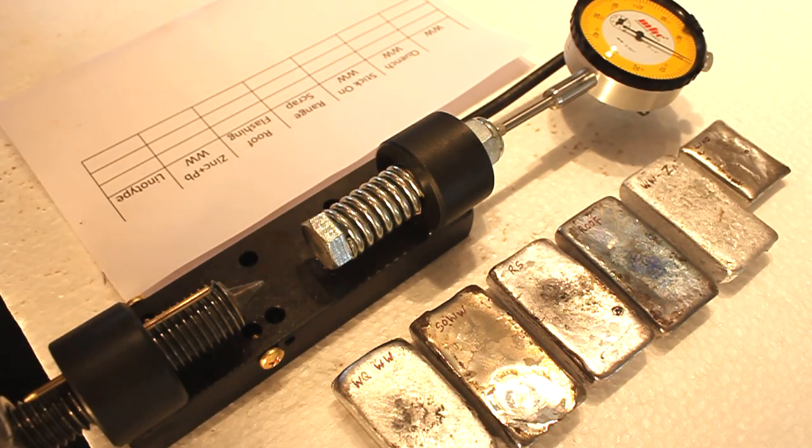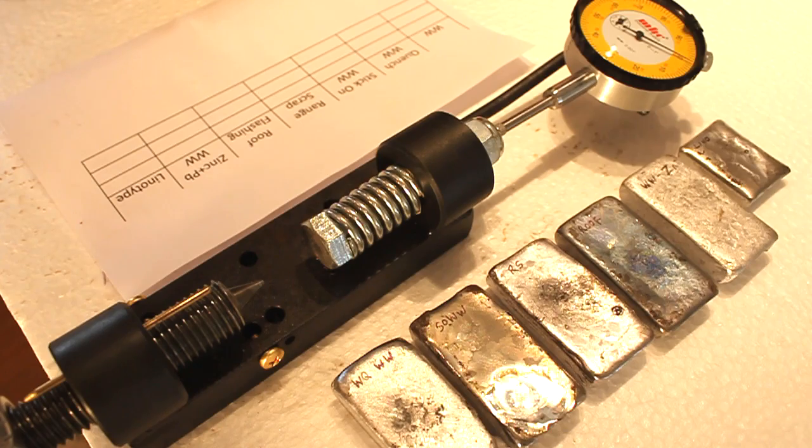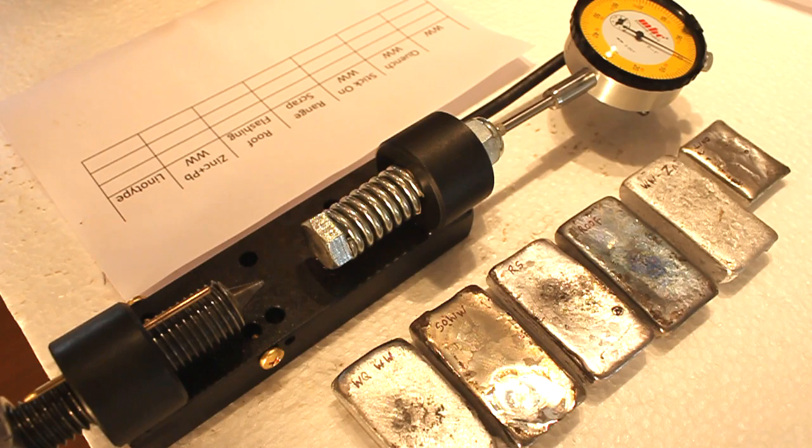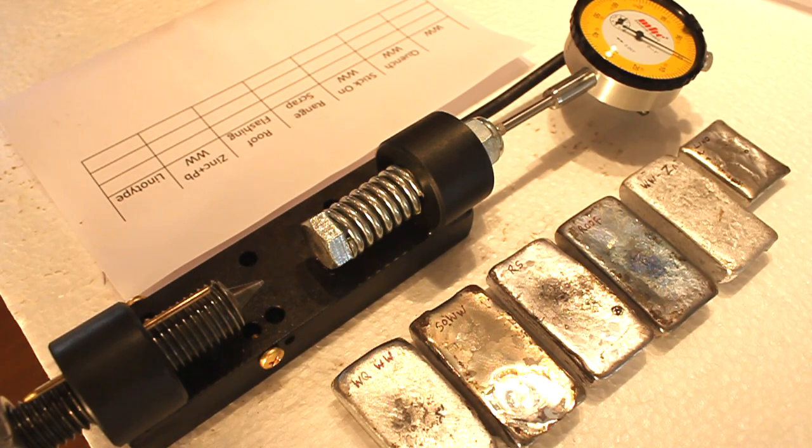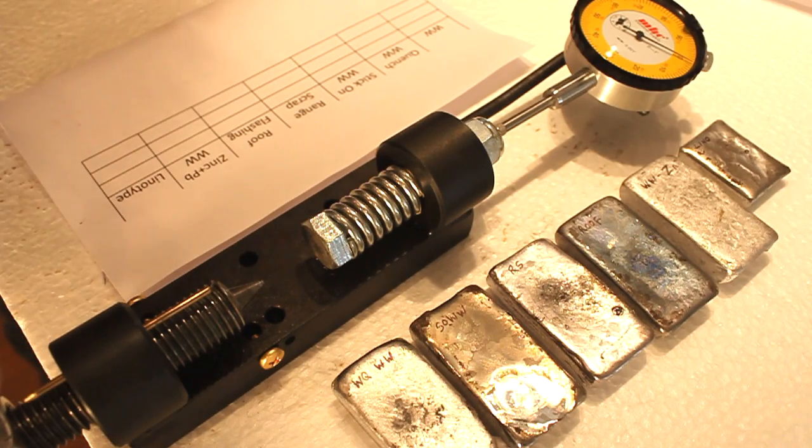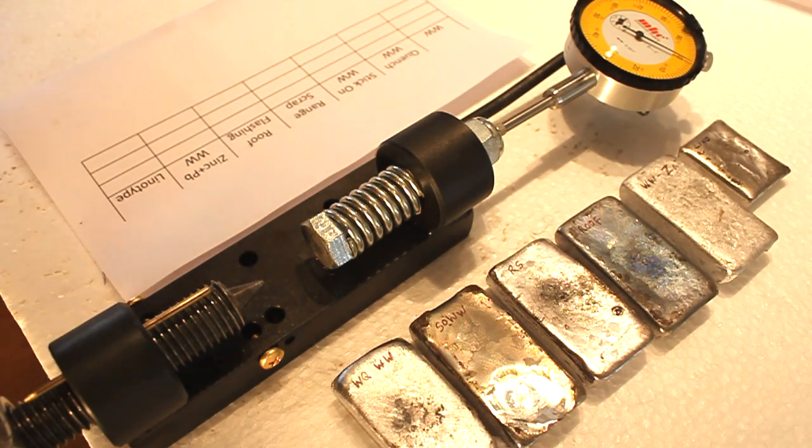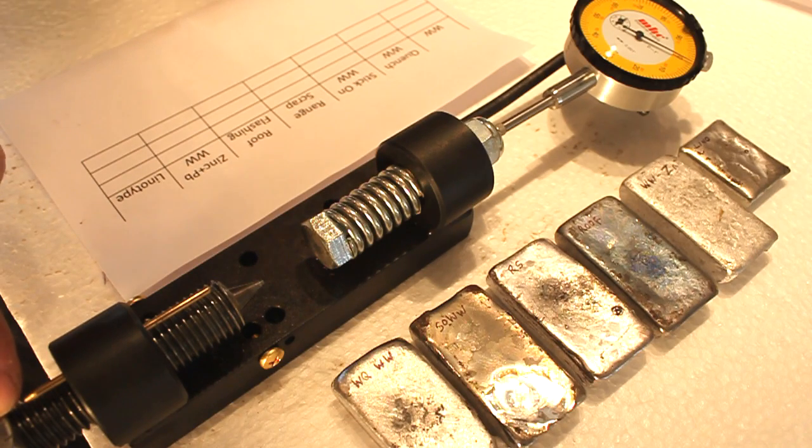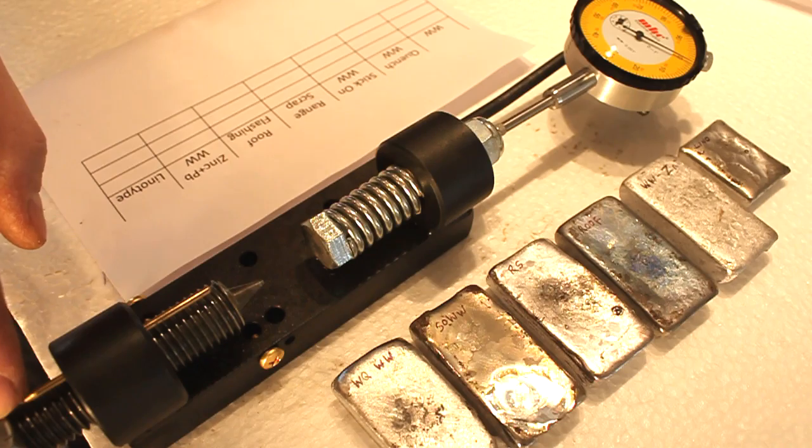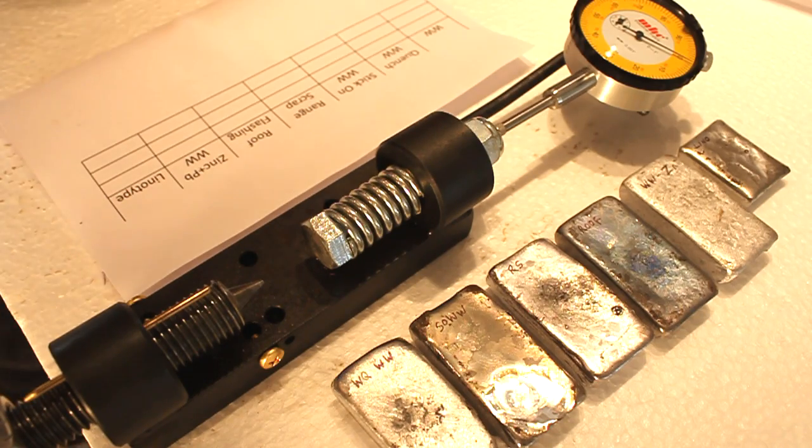The way this unit is supposed to work according to the instructions, it says run the screw point until it just touches the sample, and it should preferably be on a flat spot. After the point just touches the sample, note the exact point marker which would be here on the bolt head. It's got marks on it. It says rotate it exactly one turn and then read the indicator.